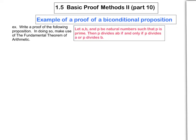In this video, we're going to do an example of a proof of a biconditional proposition, and in particular, we're going to do this one here. Let a, b, and p be natural numbers such that p is a prime. Then p divides the product ab if and only if p divides a, or p divides b.